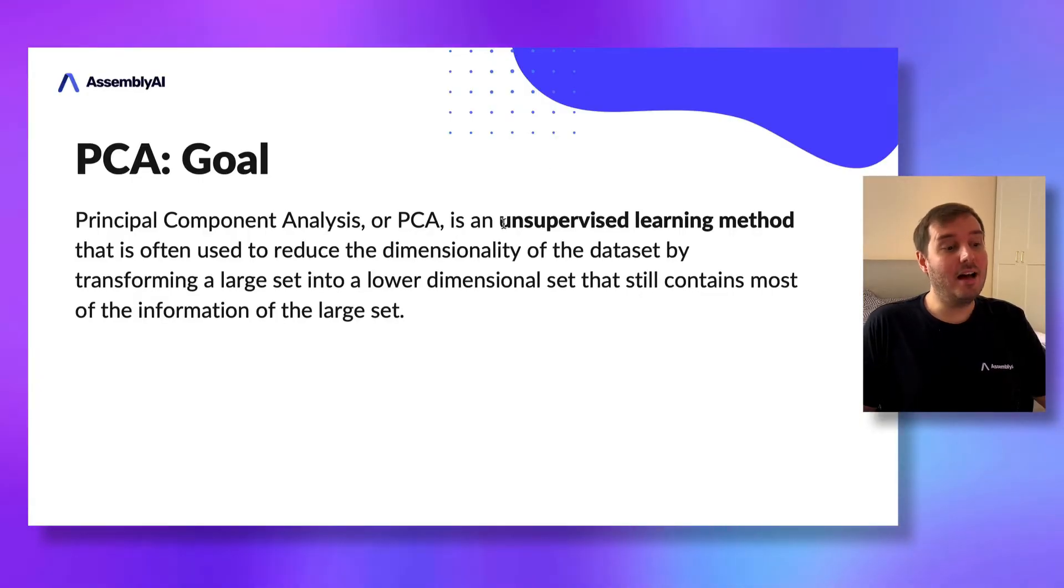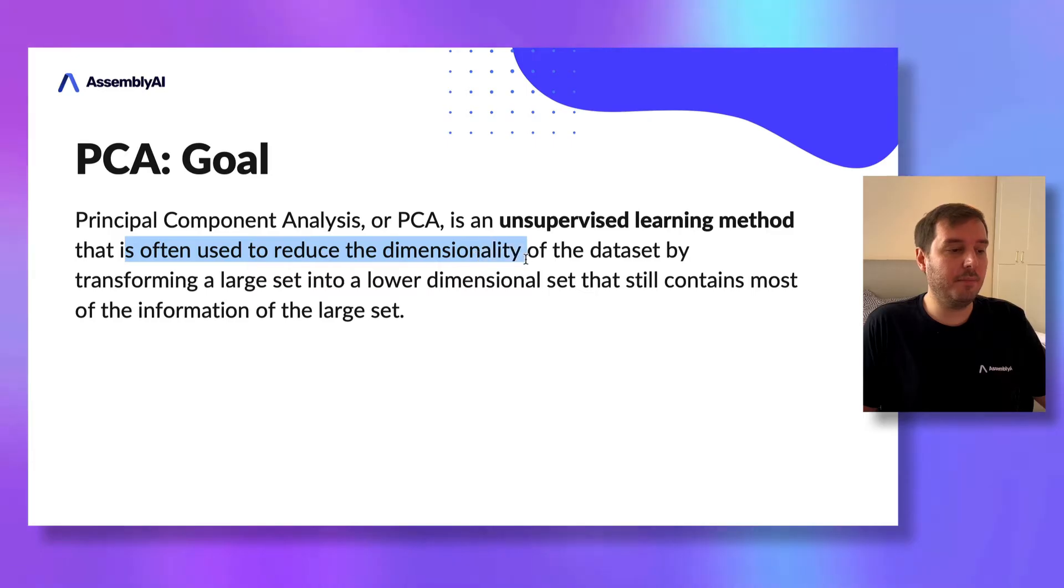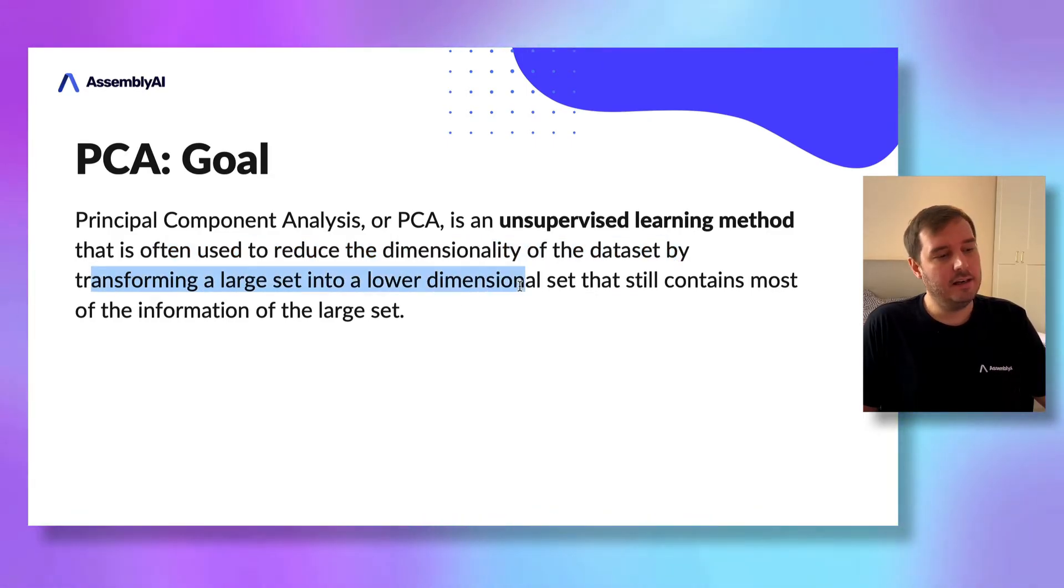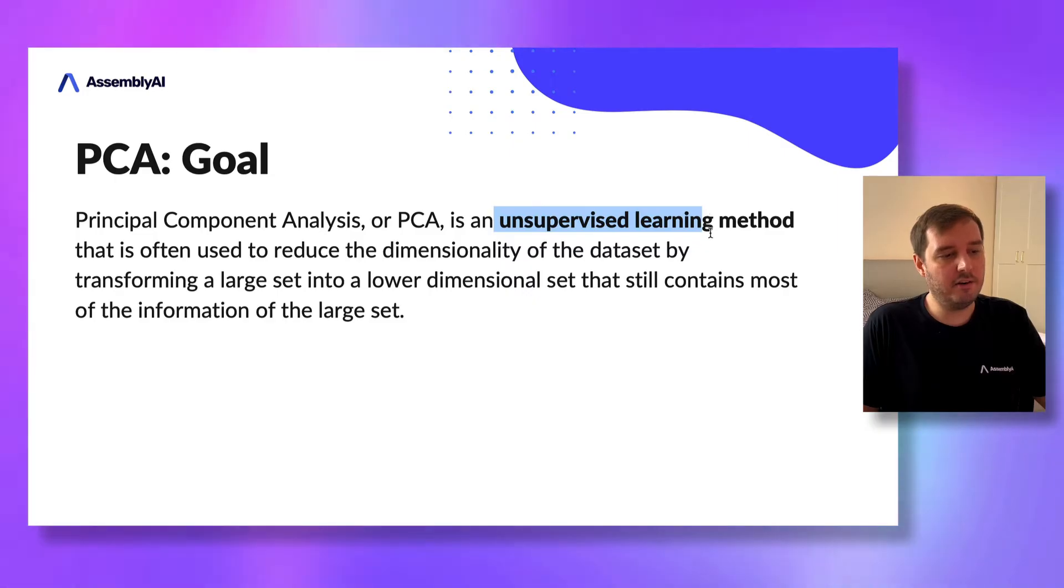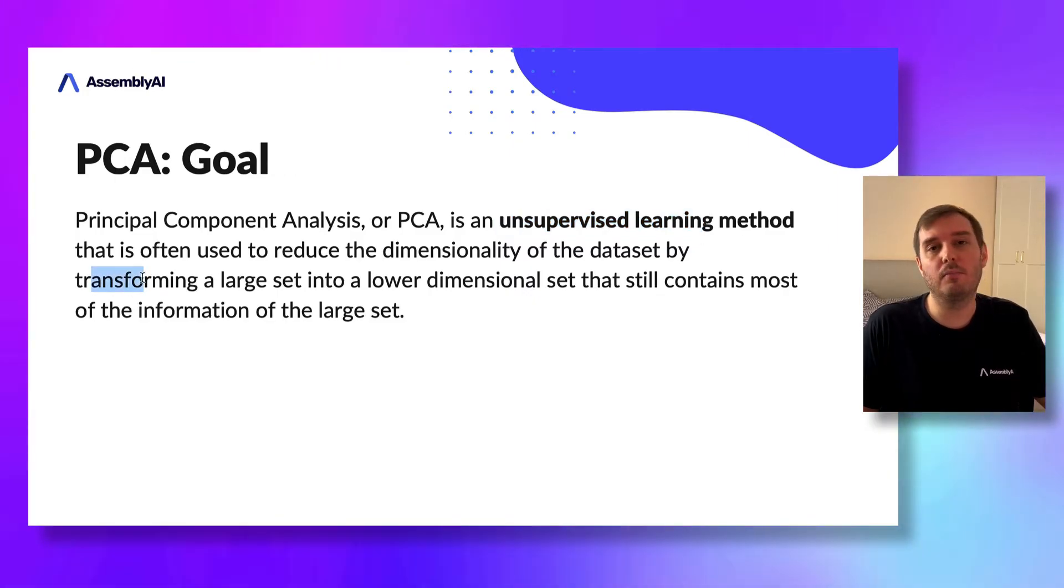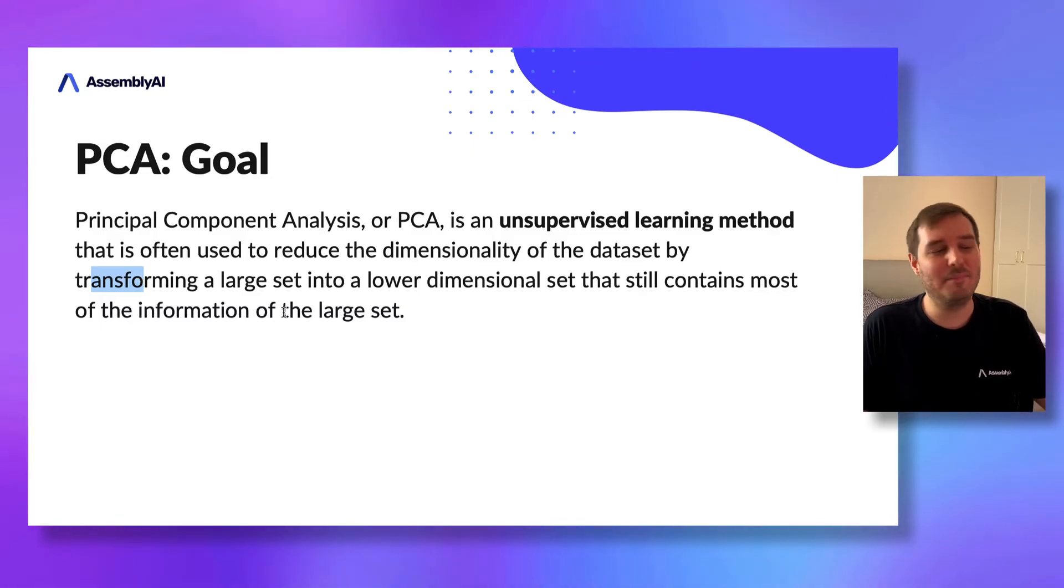PCA is an unsupervised learning method often used to reduce the dimensionality of a dataset by transforming a large set into a lower dimensional set that still contains most of the information. Unsupervised learning means we can do this transformation without knowing about the class labels, and this is very important here.